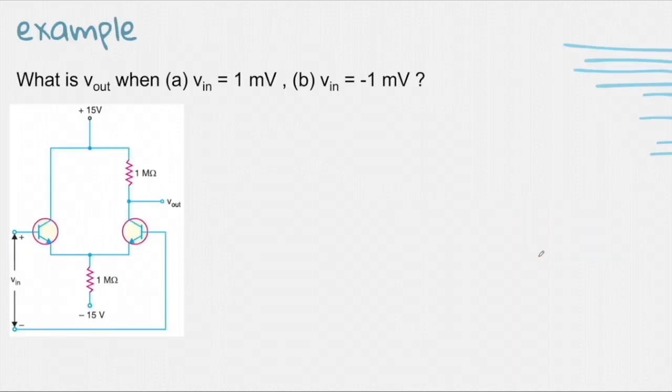As an example, what is the Vout when the Vin is 1 millivolt and for B, Vin is negative 1 millivolt. We are tasked to find the Vout given the Vin. So we have to find the differential mode voltage gain. And how are we going to solve that one?